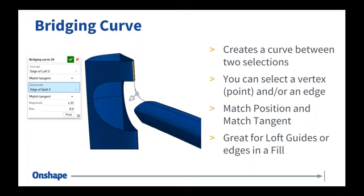Bridging curve is a curve generated between any two selections — those selections could be edges or points. The real power of the bridging curve command is the ability to match tangent and match curvature. The ability to say I want you to match the tangency or curvature of the surrounding edges is really where the power comes in. I can use that bridging curve as a loft guide or an edge for my fill, knowing that the curve itself is curvature continuous, so the surface that results from it will be too.